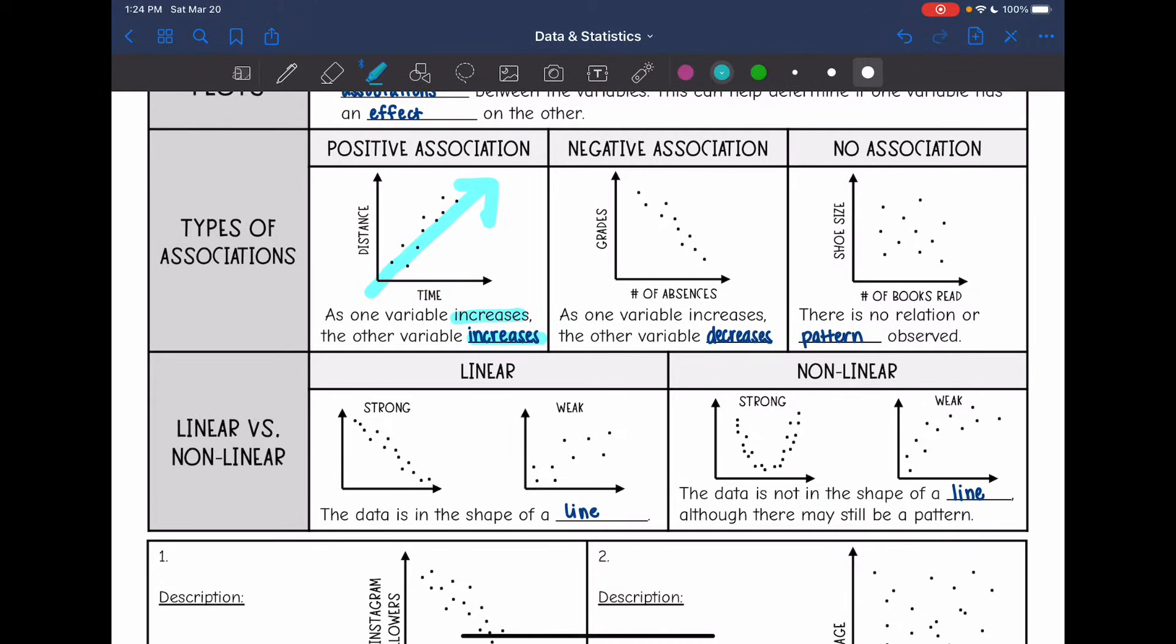Then we also have a negative association. This is where our data is going down. As one variable increases, the other decreases. You can see that on this graph here. As the number of absences goes up, the grades are going down.